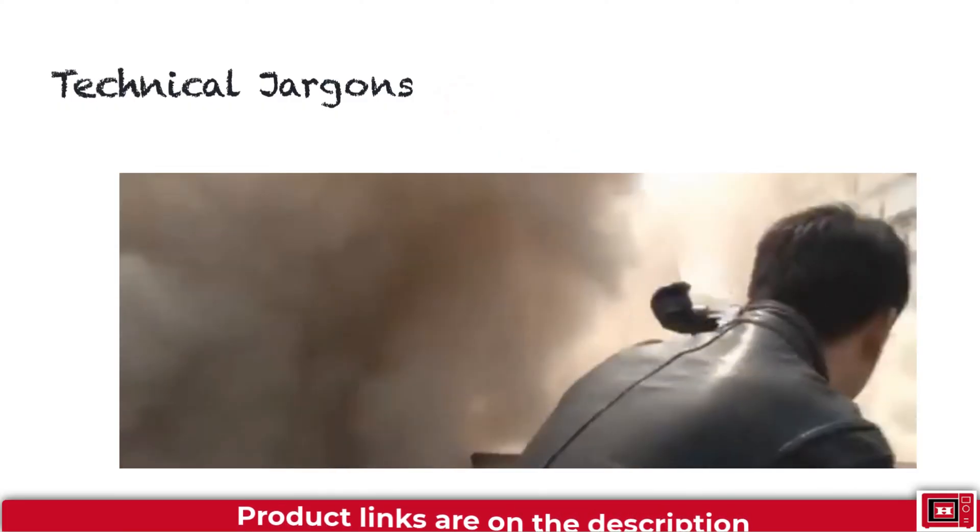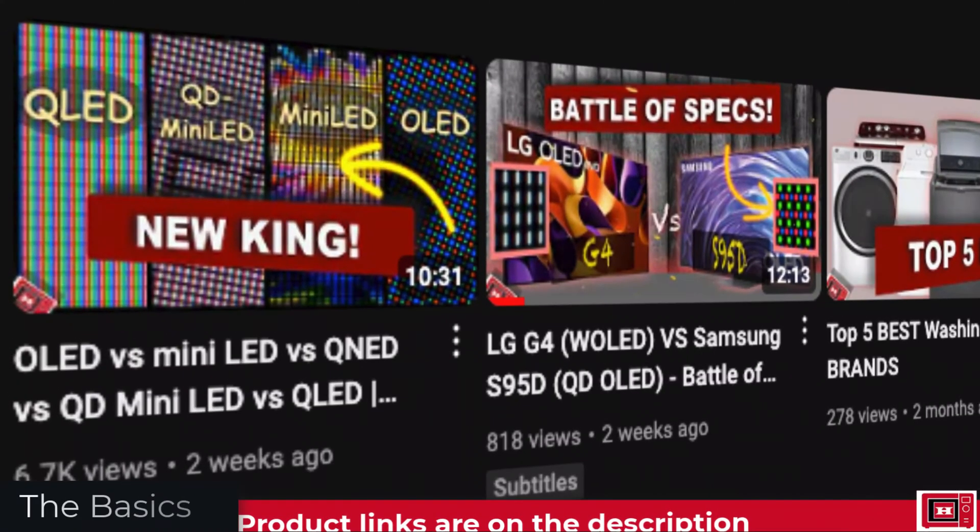First, let's look at the basics. If you're familiar with our videos, you'd already know by now that every display type is made of tiny little blocks of cells called pixels. Each pixel consists of three other subpixels, which are green, red, and blue.